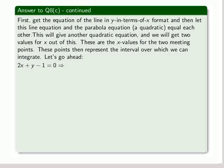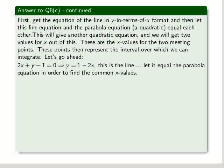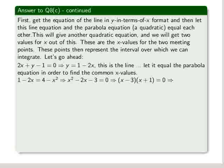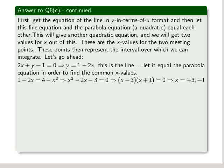So we take our line and reformat it into y equals 1 minus 2x. Let it equal the parabola equation in order to find the common x values. So 1 minus 2x now equals 4 minus x squared. We get a quadratic, fairly simple one to factor out. If you look at the coefficients properly, we get x minus 3 times x plus 1 equals 0. So the values for x are plus 3 and minus 1.